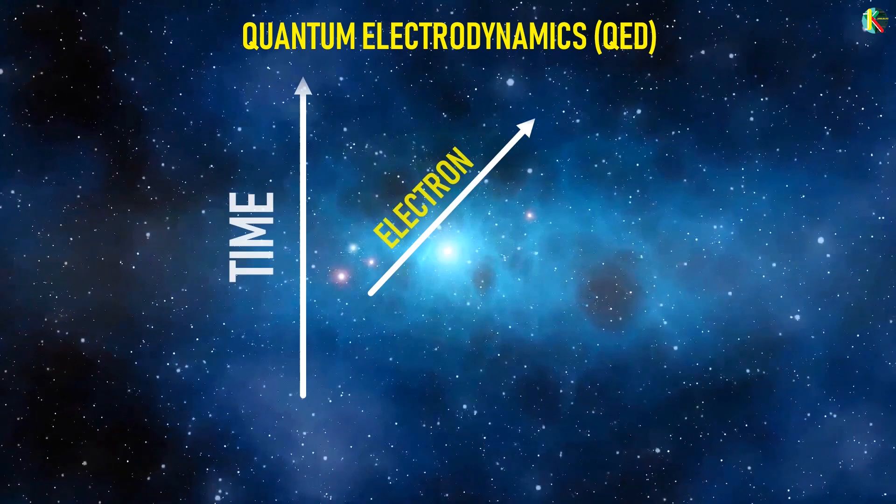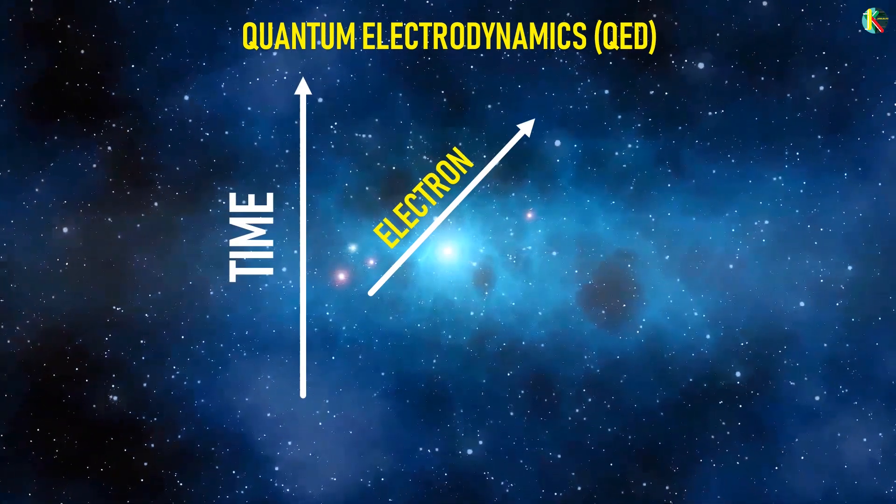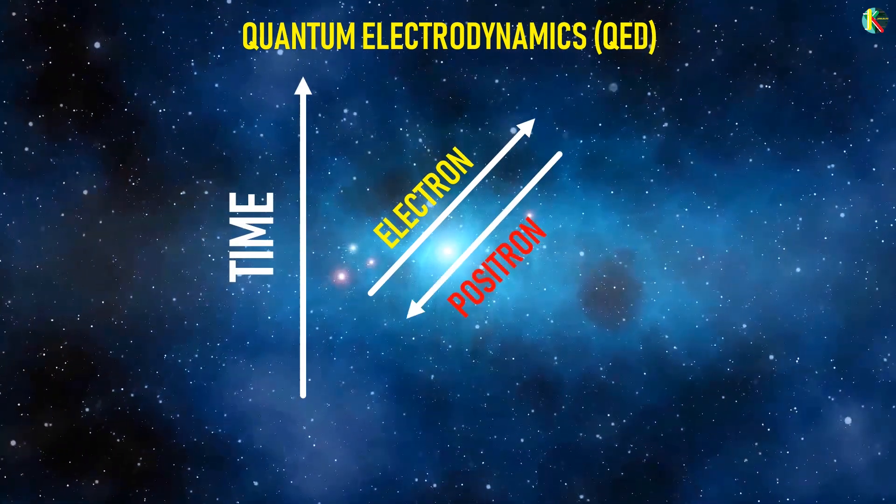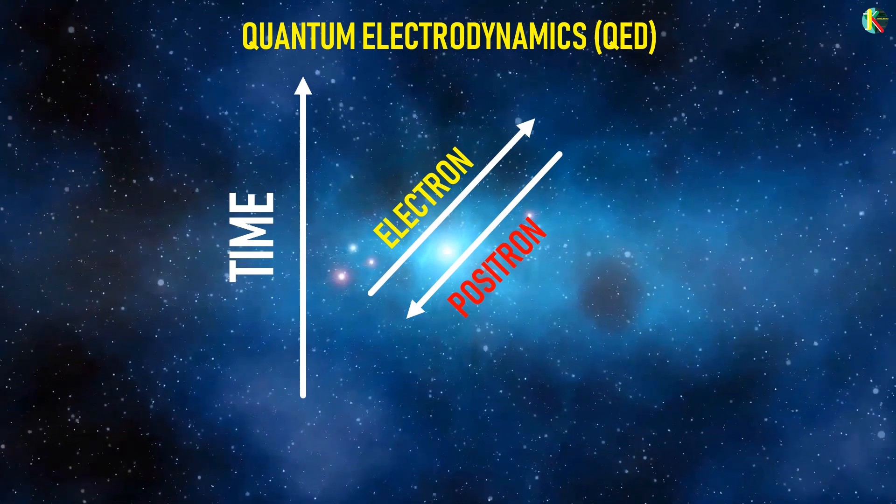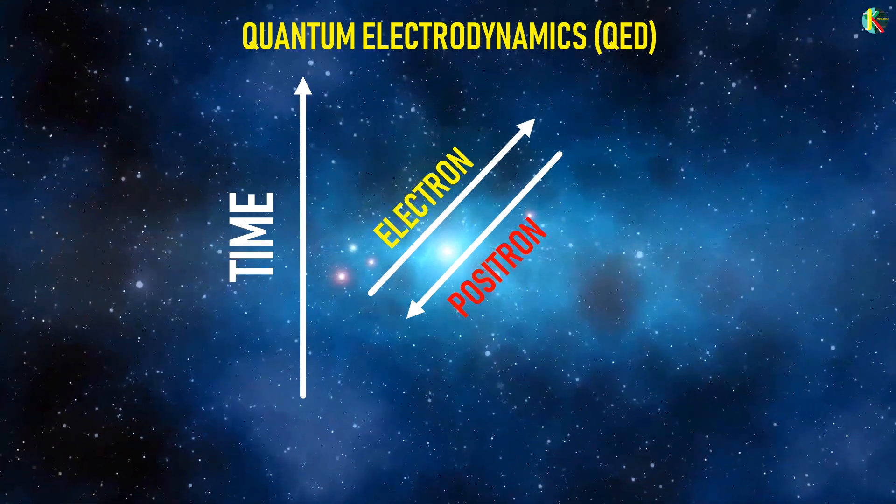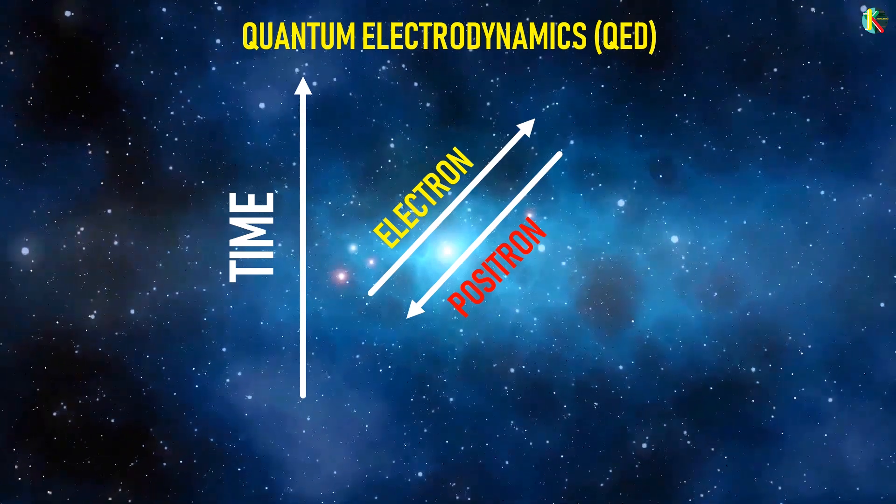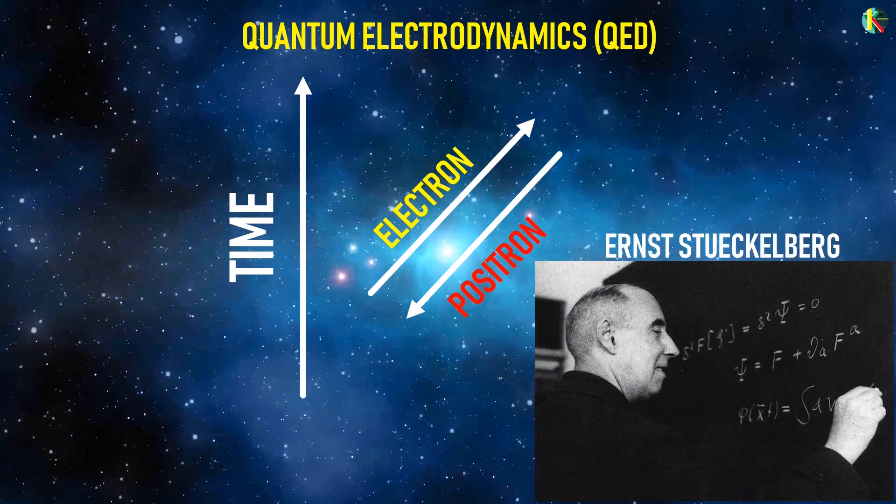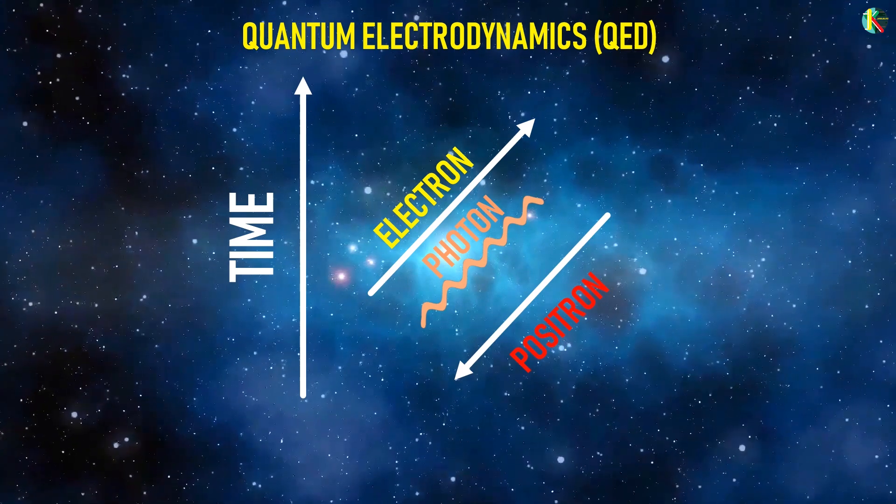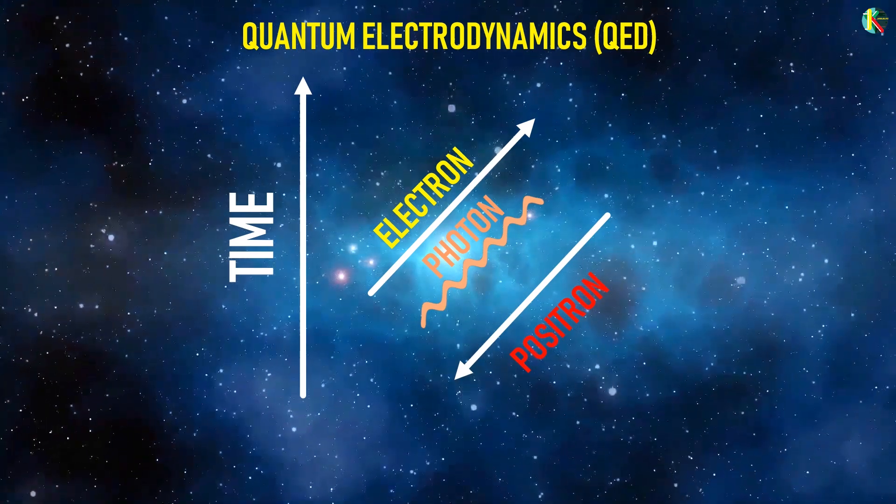In Feynman diagrams, we depict the electron as an arrow pointing forward in time or the positron as an arrow backward in time. The antimatter is represented as the time-reversed matter. This interpretation was originally the idea of Ernst Stuecklberg. The photon is shown as a wavy line. Time direction is irrelevant for photon.